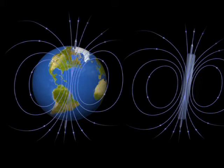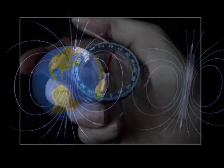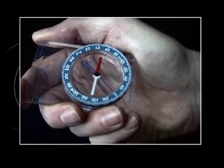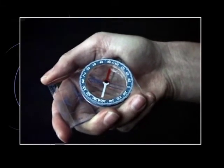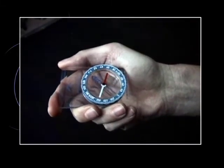This force has an effect on all magnetized objects, such as the needle of a compass. Under the effect of Earth's magnetic field, the needle always points toward the north magnetic pole.